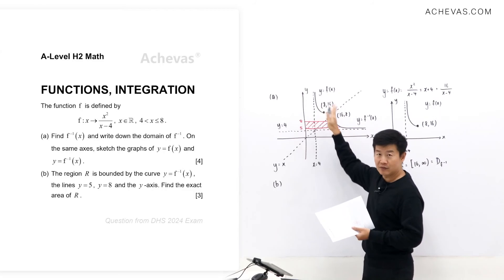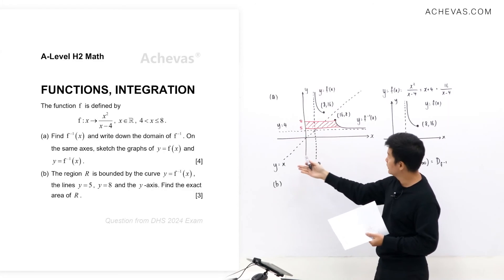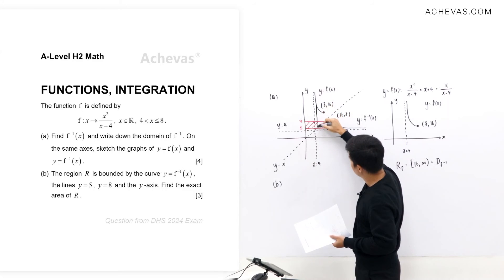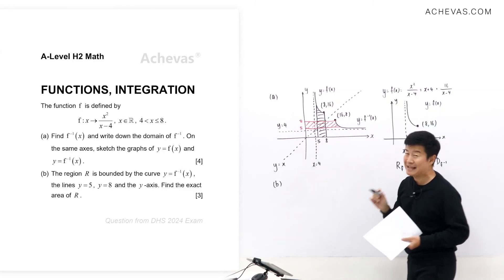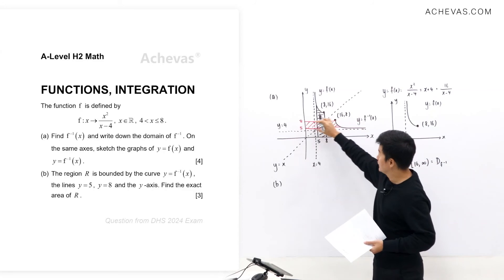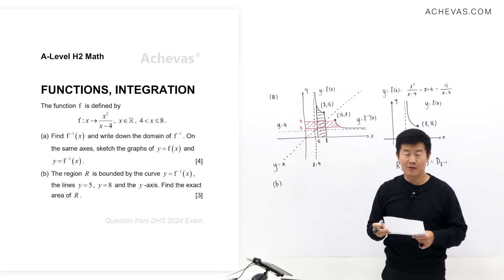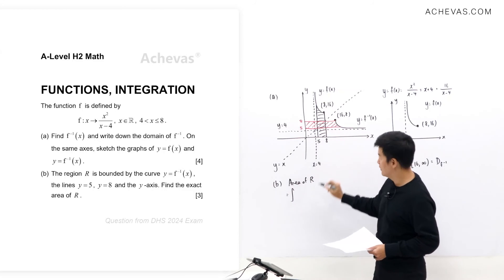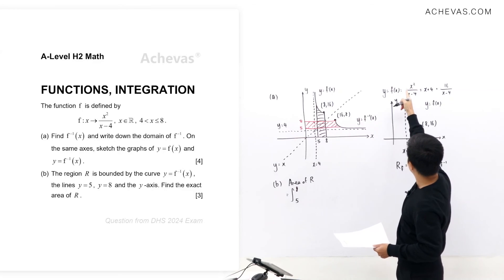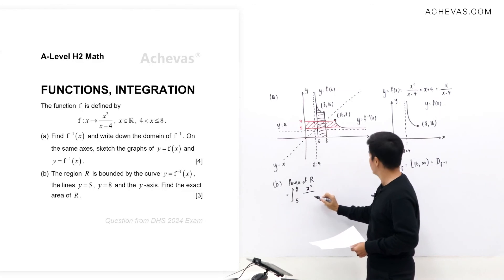Rather than integrating over region R directly, we use the reflection property about y = x. The area of region R equals the area under f(x) from x = 5 to x = 8 — the reflected region. This is much easier to integrate, so we use the expanded form: x + 4 + 16/(x - 4).